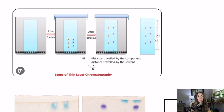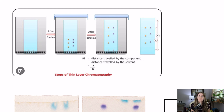The first one we're going to be talking about is thin layer chromatography, or TLC. You probably are familiar with this from your organic chemistry labs. All chromatography as a whole is going to separate things based on polarity — pretty much. We'll get into the exceptions later, but TLC does.